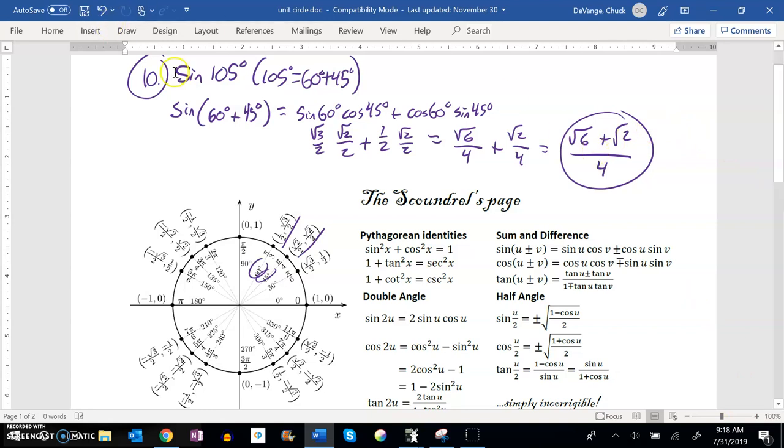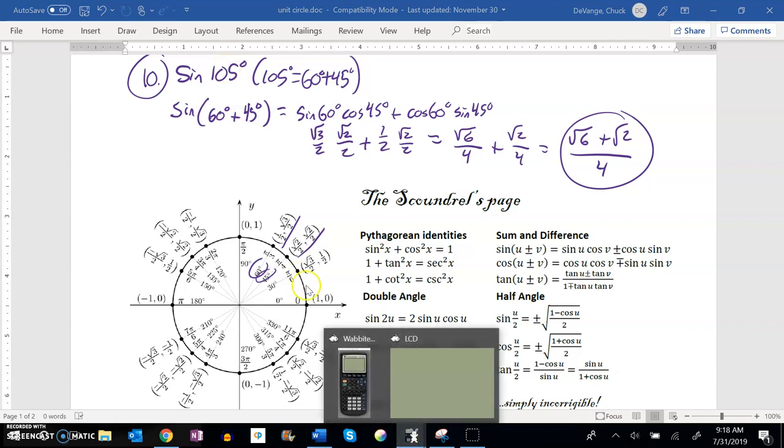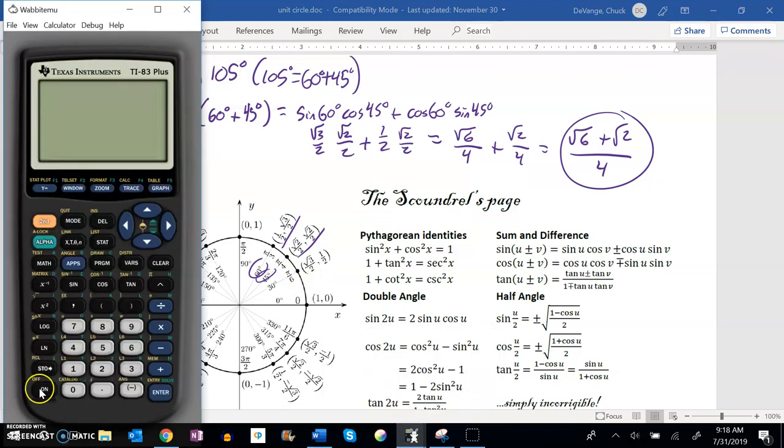And what I love about this is I can check this on my calculator. I could go sine of 105 degrees, get some value. Better put myself into degree mode. So let's see, sine of 105 degrees is that.